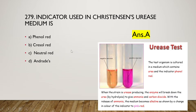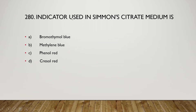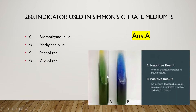The next question is: the indicator used in Simmons citrate medium is (A) bromothymol blue, (B) methylene blue, (C) phenol red, or (D) cresol red. The right answer is option A — bromothymol blue. In Simmons citrate agar, if the medium develops a color change from green to blue, it indicates bacterial growth, because the microorganism uses citrate as its carbon source, making the culture citrate-positive.